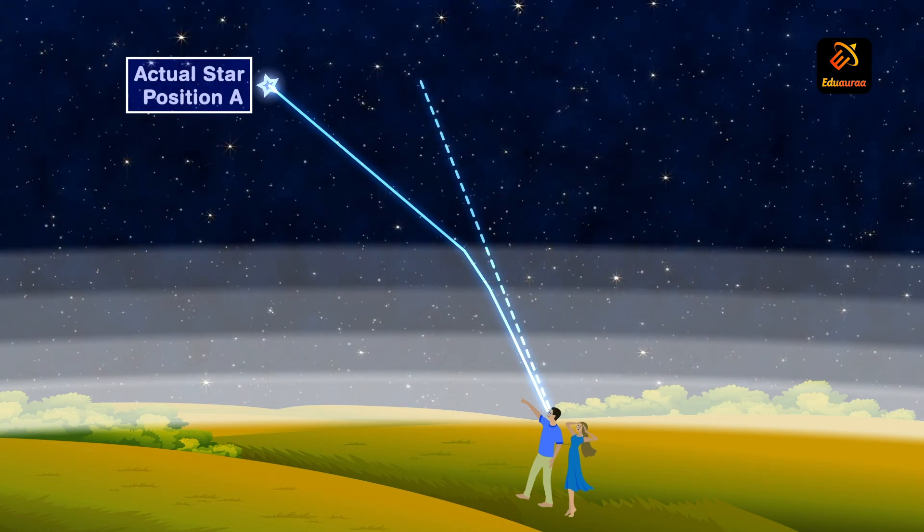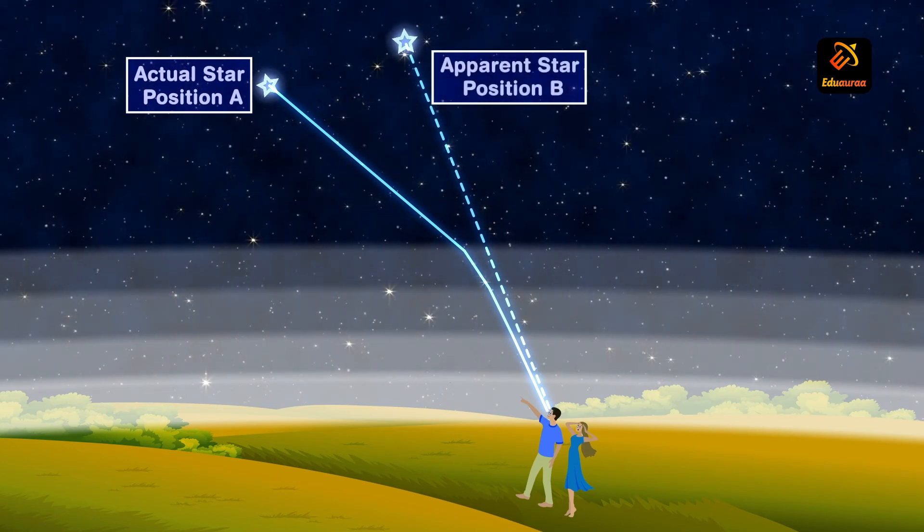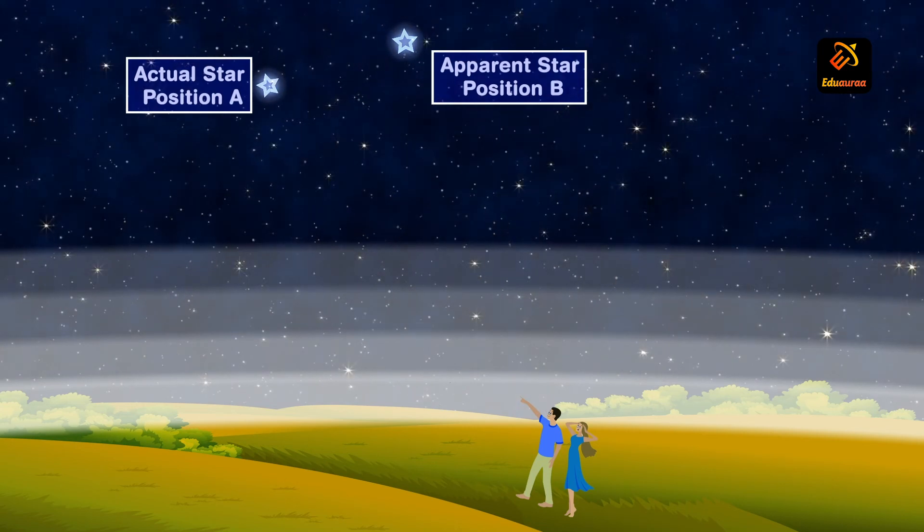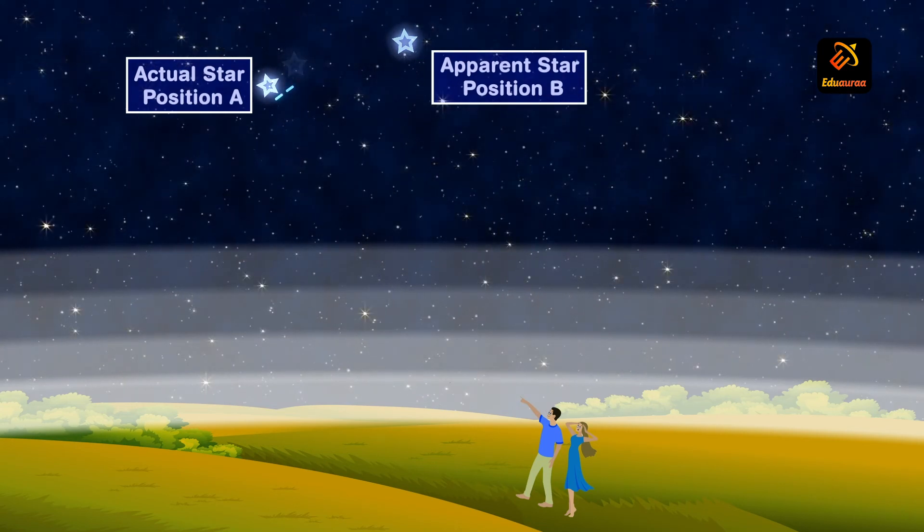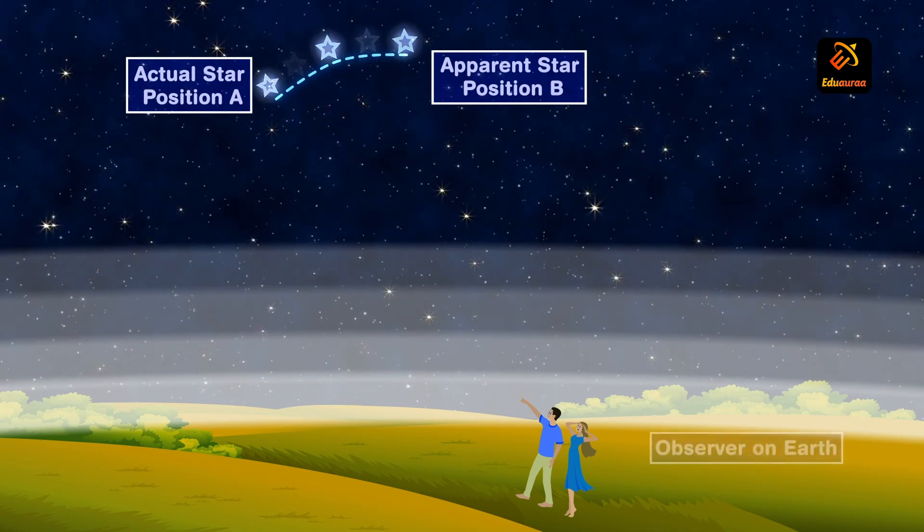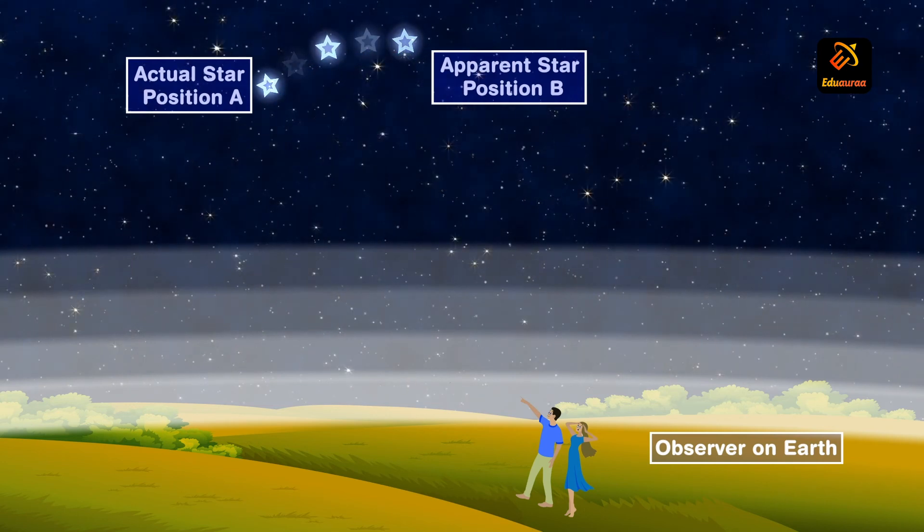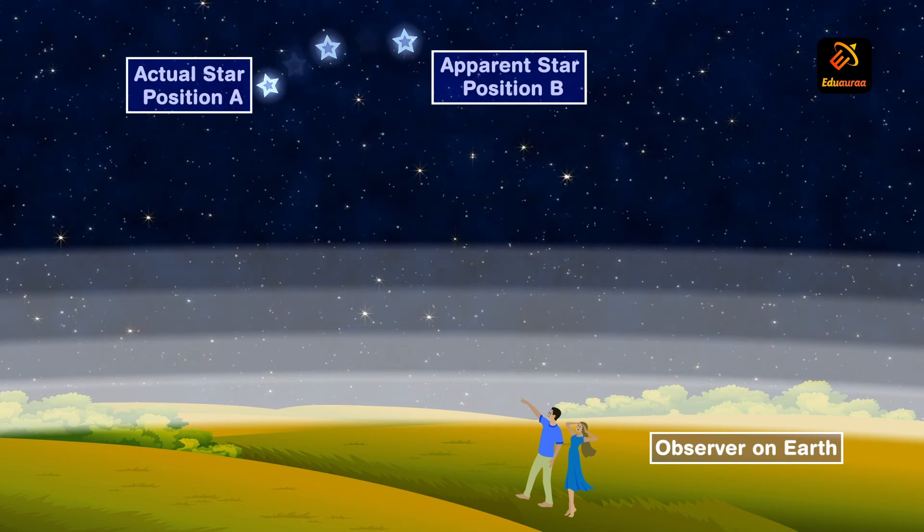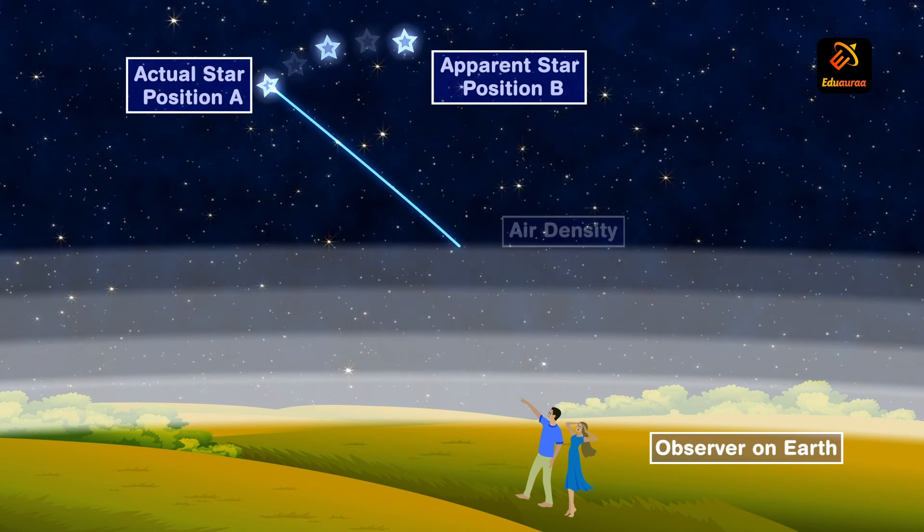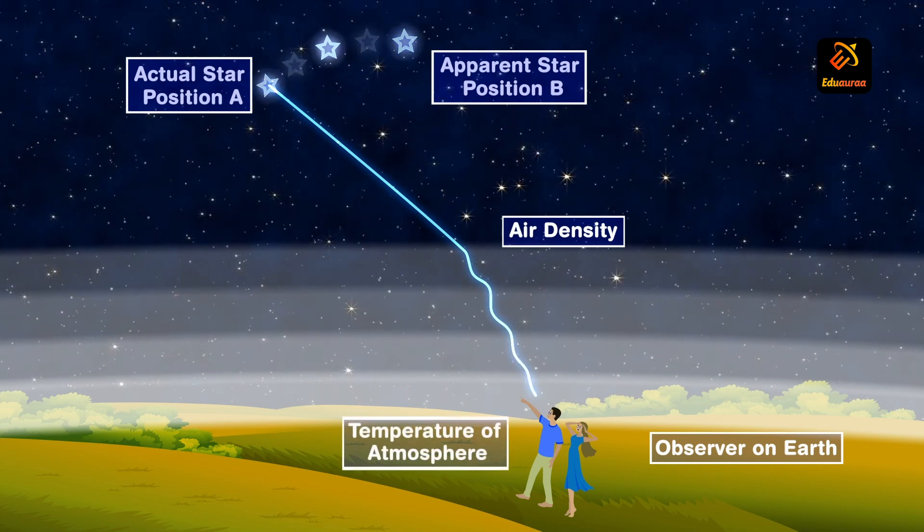Thus, the ray appears to come from point B, which gives the apparent position of the star. The twinkling can be explained when the star is within the line of sight, it is visible. However, when it falls out of the line of sight, it becomes invisible. The apparent position of stars keeps on changing because the air density and temperature of atmosphere changes.